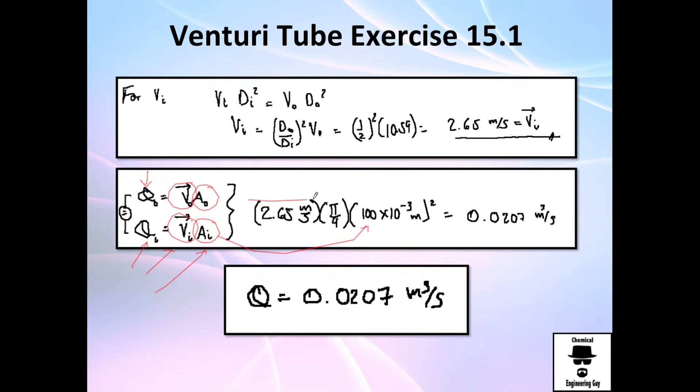You're going to at least know the velocity and the area of the pipe. So the velocity is 2.65 which I just calculated, pi divided by 4, and this 100 times 10 to the minus 3. Don't forget to square it. You got this volumetric flow rate which is 0.0207 cubic meters per second.